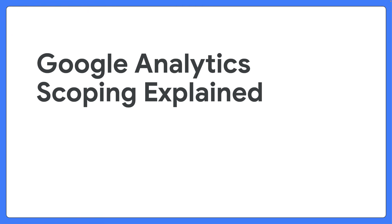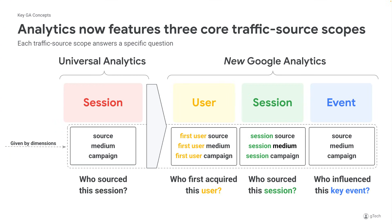Let's take a look at scoping in Google Analytics. Analytics now features three core scopes. Previously, we only had one — it was based on the session. In the new Google Analytics, we have scopes for user, session, and event.